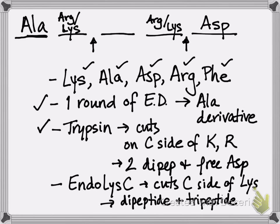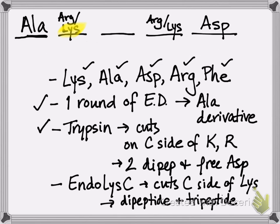EndoLys-C cuts on the carbonyl side of lysine and gives us a dipeptide and a tripeptide. If lysine is in the second position, that would give us a dipeptide and a tripeptide with an EndoLys-C digest — and that works nicely with our first guess, narrowing down the location of lysine. So lysine must be here in the second position, which means arginine must be in the other cut position.